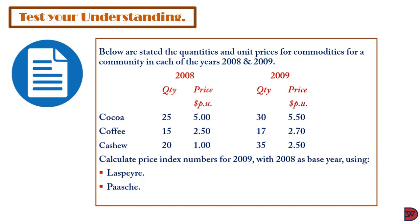For cashew: quantity is 20 and price is $1.00 for 2008, while for 2009 quantity is 35 and price is $2.50. We have to calculate the price index for 2009 with 2008 as the base year, using the Laspeyres and the Paasche price index.